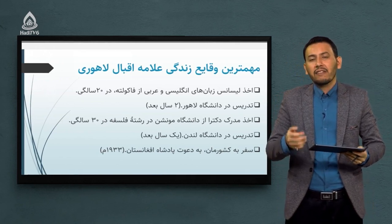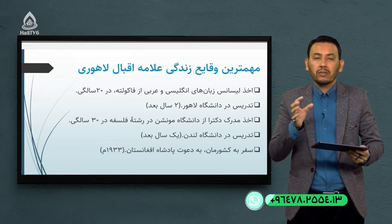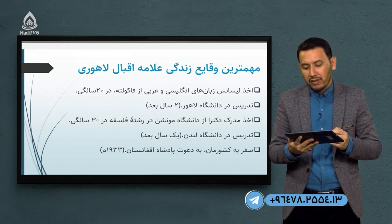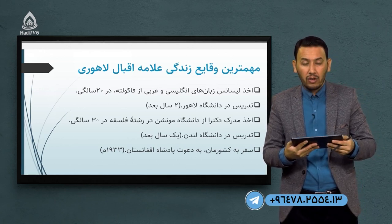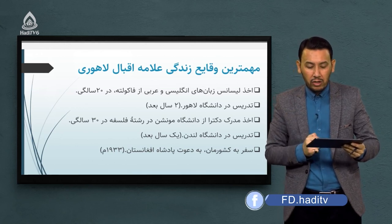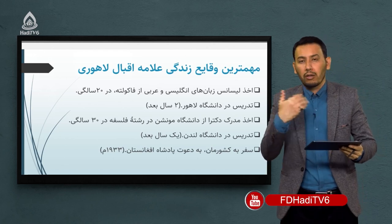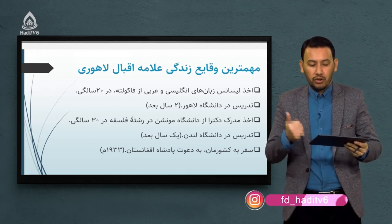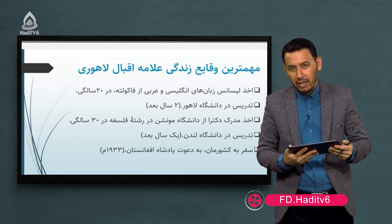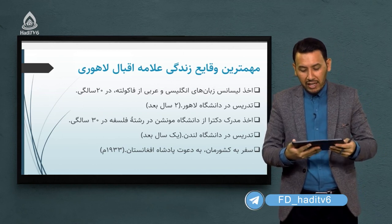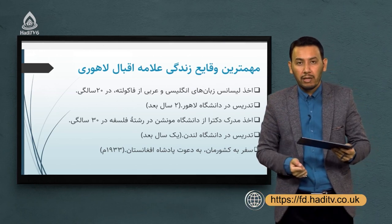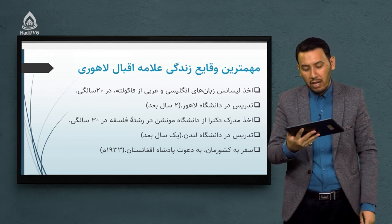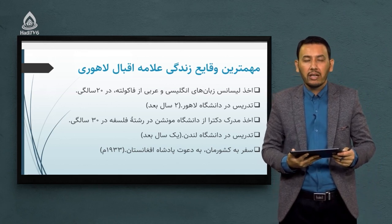در حوزه زندگی اشان رویدادها و حوادث مهمی نام برده شده. اشان رتبه لیسانس زبان‌های انگلیسی و عربی را از فاکلتی لاهور گرفتند. دو سال بعد مشغول به تدریس شدند. مدرک دکترای خود را از دانشگاه مونیخ در کشور جرمنی در رشته فلسفه در سی‌سالگی گرفتند و یک سال بعد در دانشگاه لندن مشغول به تدریس شدند. سفر به افغانستان به دعوت پادشاه افغانستان در سال ۱۹۳۳ میلادی انجام شد.